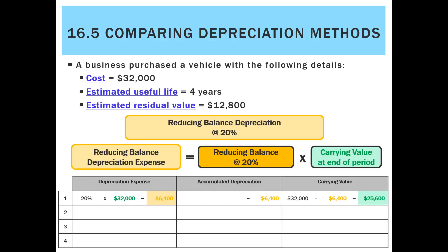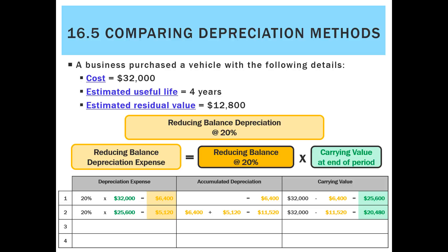The carrying value after year one is $32,000 less $6,400 accumulated depreciation, giving $25,600. In year two, 20% times $25,600 gives depreciation of $5,120. Year three: the new carrying value of $20,480 times 20% gives $4,096. Finally, in year four, 20% times $16,384 gives depreciation that brings the carrying value down to $13,107.